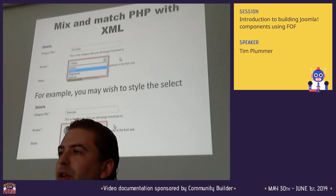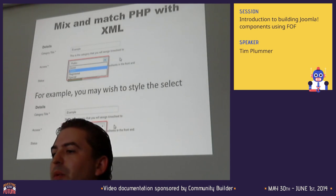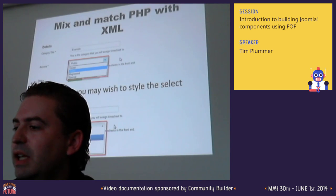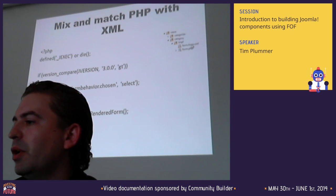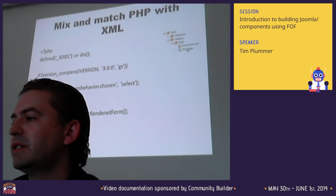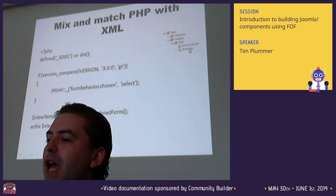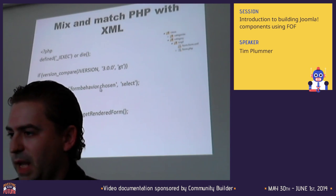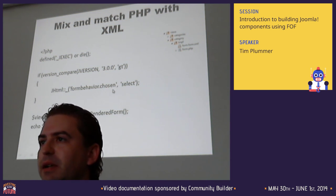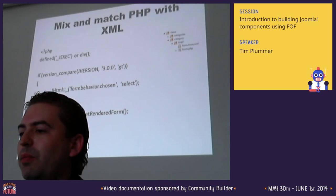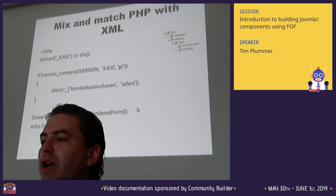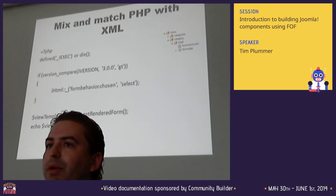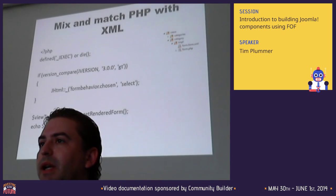Besides having XML-only views, you can also combine XML with PHP. For example, if you want to style a dropdown list to look nicer, you create a form.php file in the same folder as the form.xml file. The PHP file loads first and then loads the XML file. You load the chosen select library to style the select input field, then render the form - which loads the XML. You can add whatever code you like before or after it, such as a copyright footer or something above the view.